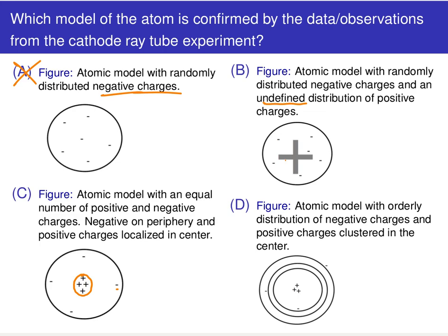Now we don't know anything about the distribution from Thomson's experiment — we just know there must be some undefined distribution of positive charge present in order to balance out that negative charge.